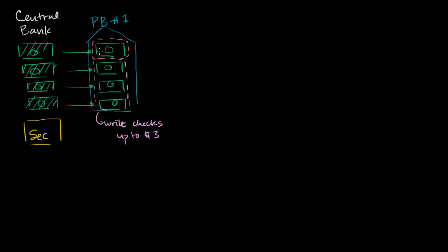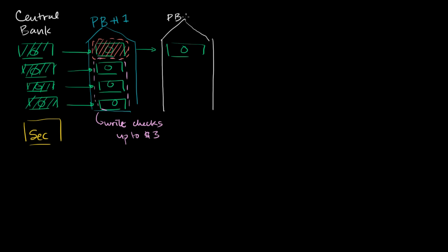The bank says this savings dollar — they don't have to keep any reserves against it, so they can loan it out. The person they lend it to immediately goes and deposits it in private bank number 2. So it's no longer in private bank 1. They deposit it into a savings account in private bank number 2.